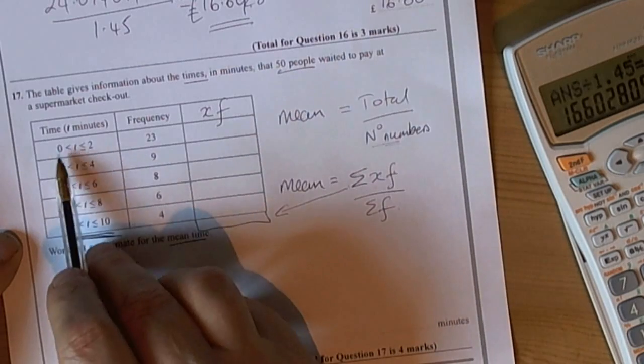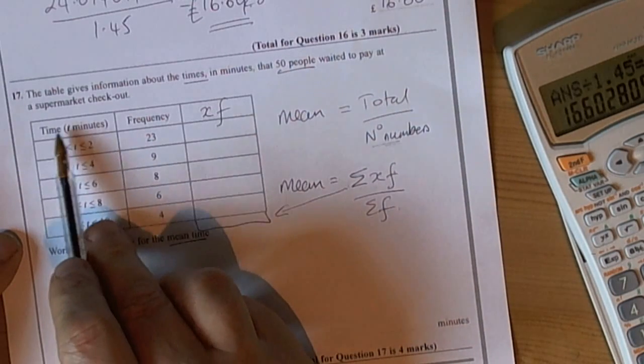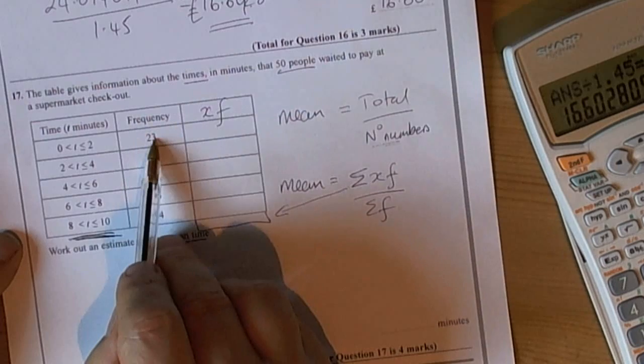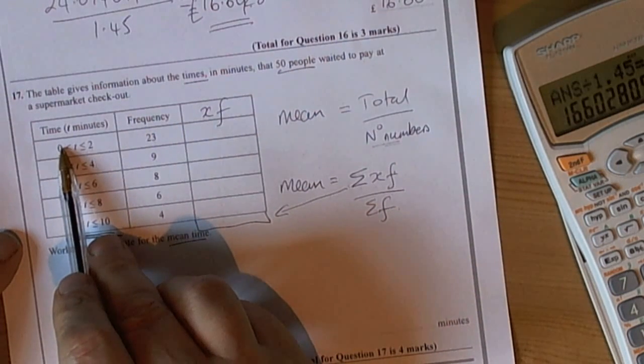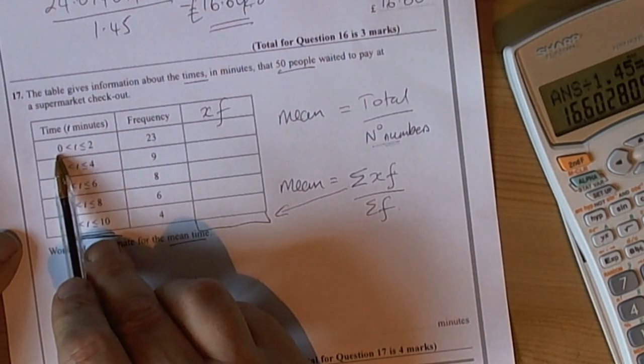So x in this case - we've got to be careful here because it is the variable time. But which of the times do we use for these 23 people? Well it's obviously not going to be 0 because they did take some time. It's saying it's greater than 0.